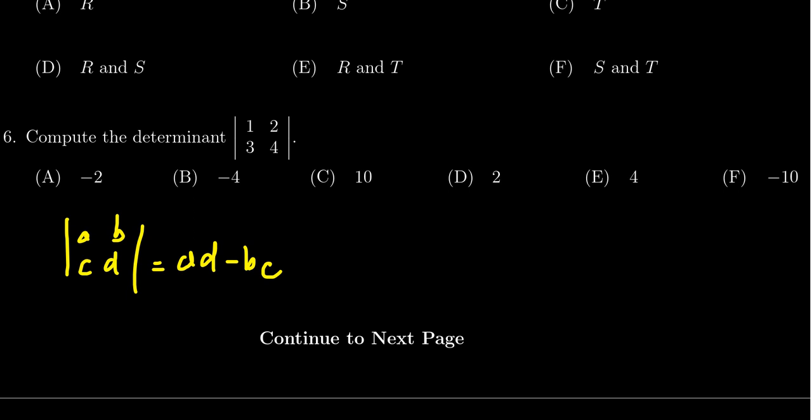We're just going to do that calculation right here, for which case we get 1 times 4 minus 2 times 3. So we end up with 4 minus 6.